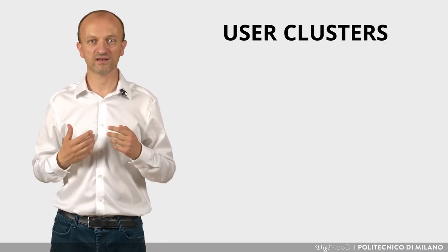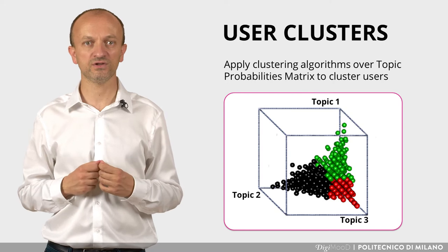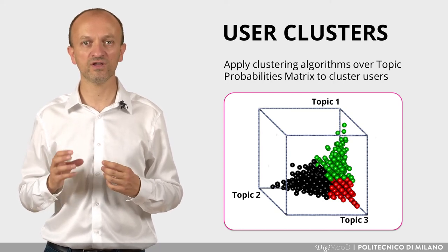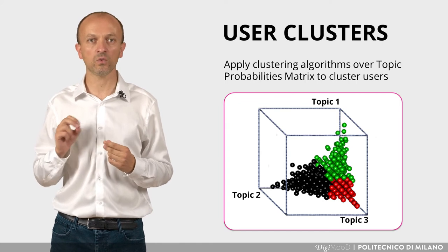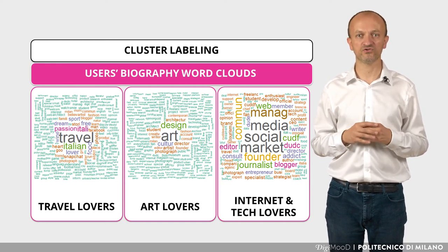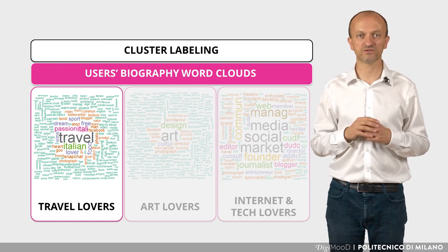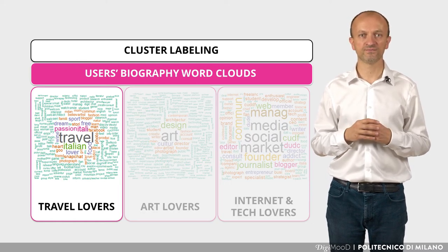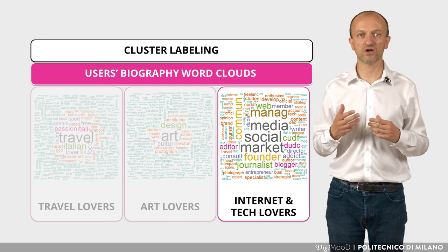Based on this analysis, we then cluster the users based on how they were covering the different topics. For instance, here you see a 3D map of user positioning along the three most relevant topics. The coloring of the users represents the tendency to be aligned to one or another topic. To understand the semantics of these topics, we can plot the word clouds of the biographies of the respective users. A clear trend emerges: the first user cluster collects mainly travel users, the second is all about art and design, and the third aggregates internet, technology and media lovers.